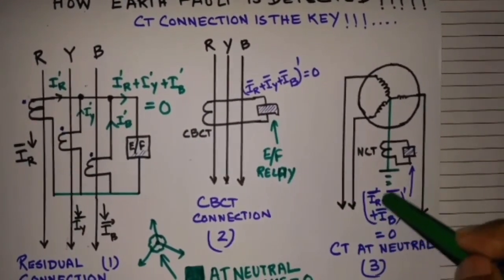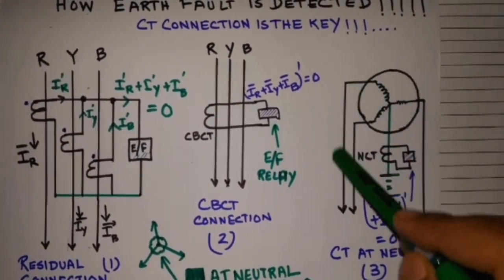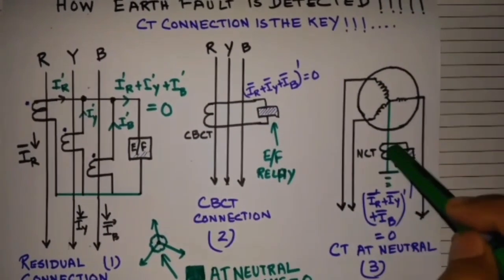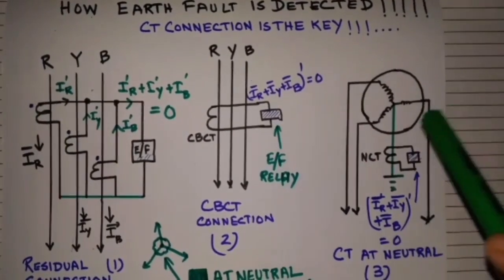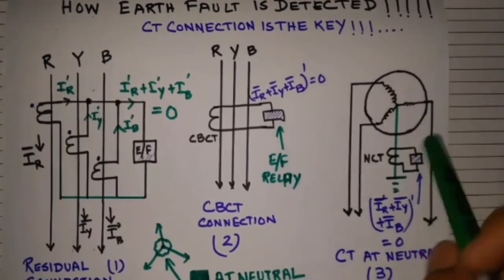But when there is an earth fault, suppose this phase has faulted, so it will return to this path. The current path will be like this. Then this CT will see a current value and will cause the relay to energize.